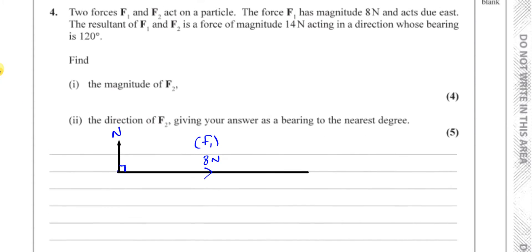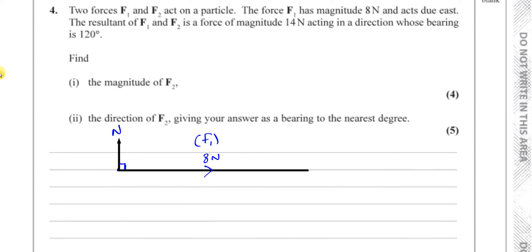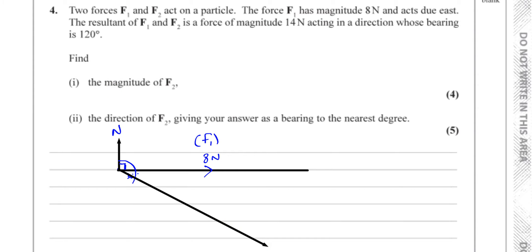The resultant has magnitude 14 newtons and acts on a bearing of 120 degrees, which is 90 plus 30 degrees from the north line. So this angle here is 30 degrees, making the full bearing 120 degrees. The resultant is going to be somewhere in this direction.